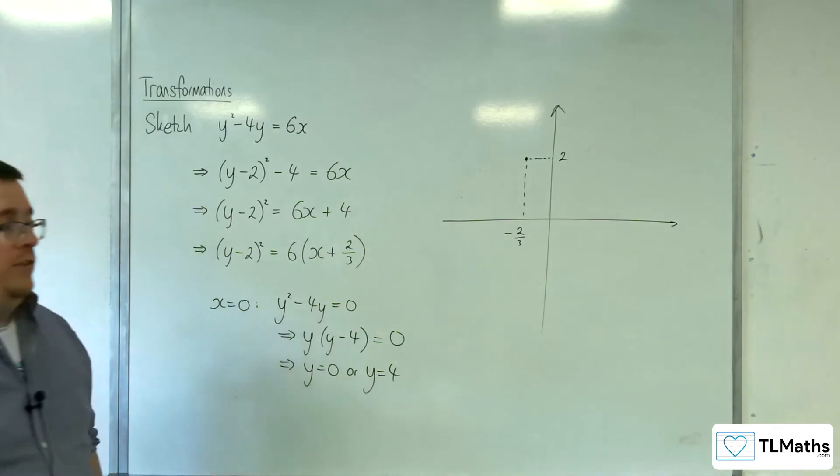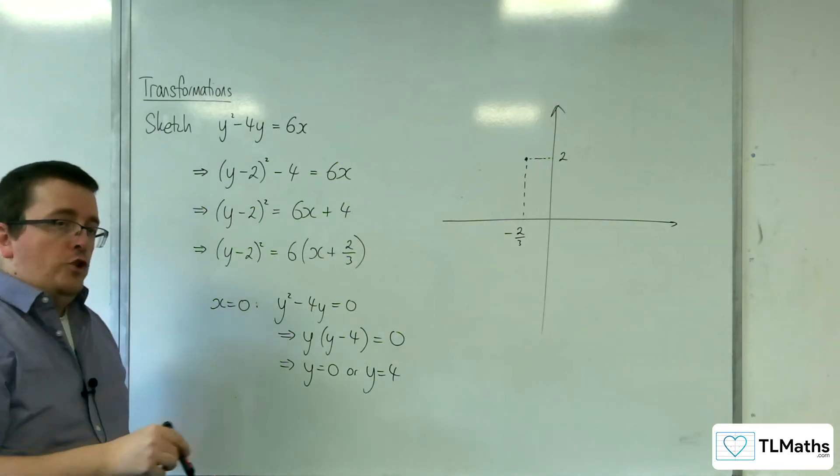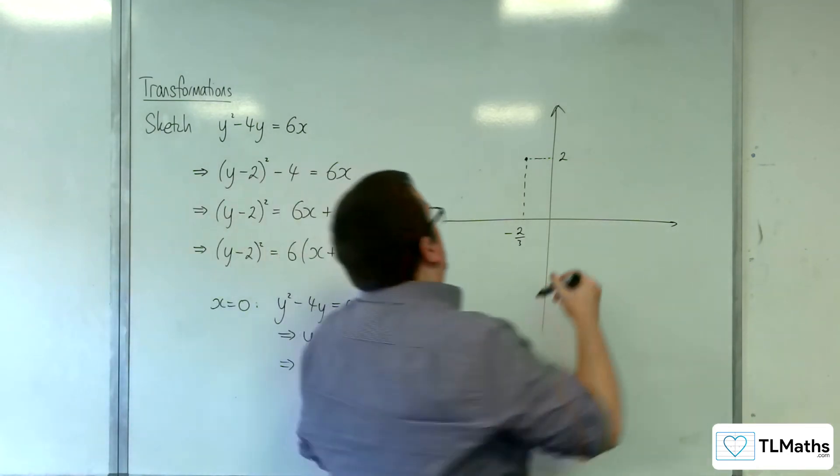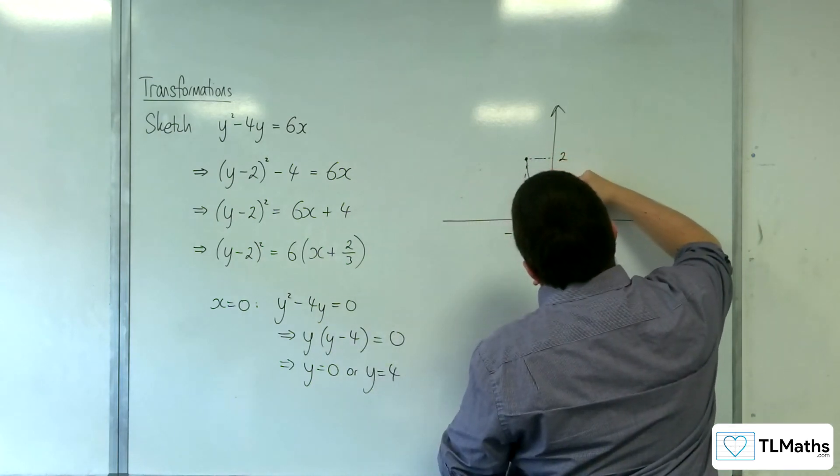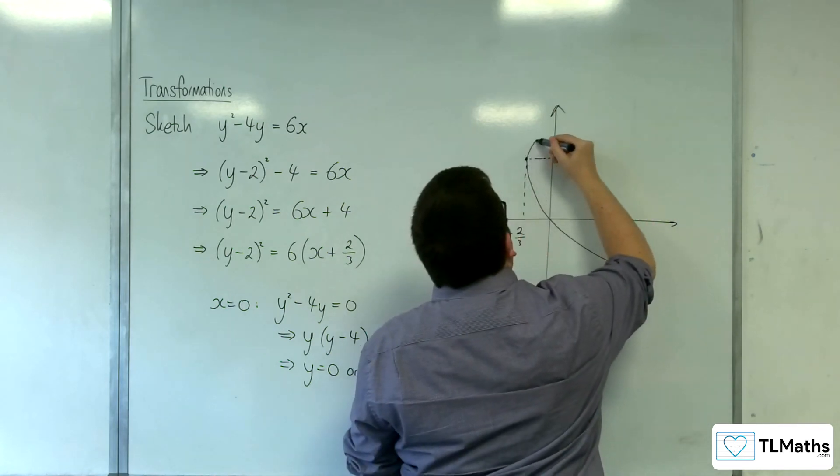Which means that the curve is going through the origin. So the curve's going through the origin. Okay, so the parabola will look like this.